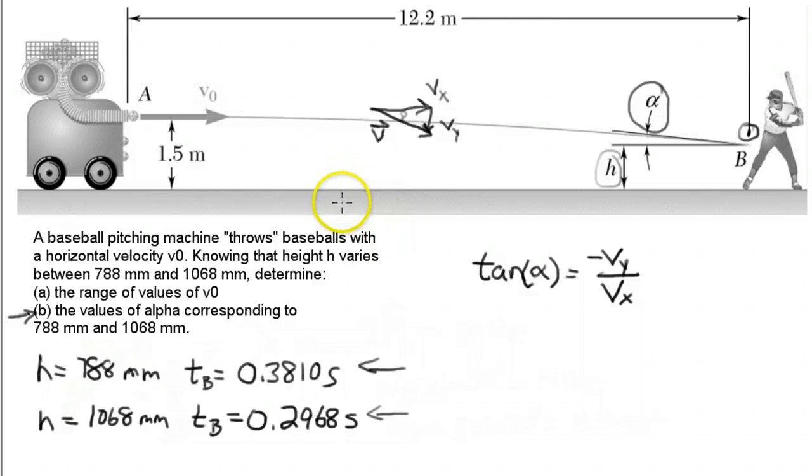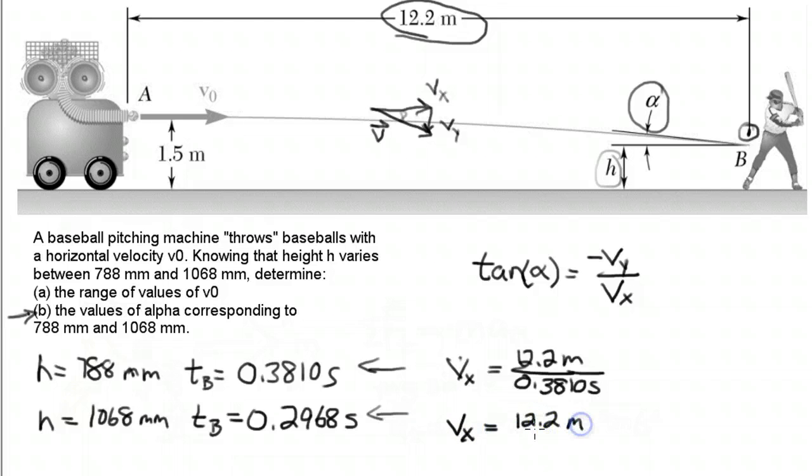The vx is very simple. It's at a constant velocity. We know the distance traveled is 12.2 meters, and we know the time it takes. So velocity in the x direction in this case is 12.2 meters divided by 0.3810 seconds. In the second case, it'll also be 12.2 meters divided by 0.2968 seconds.